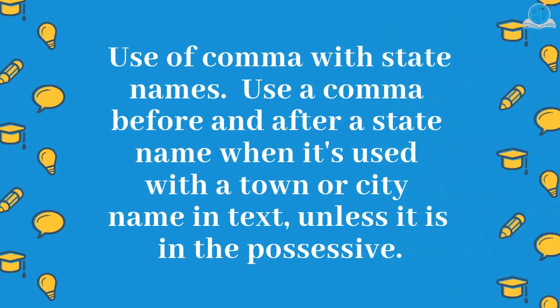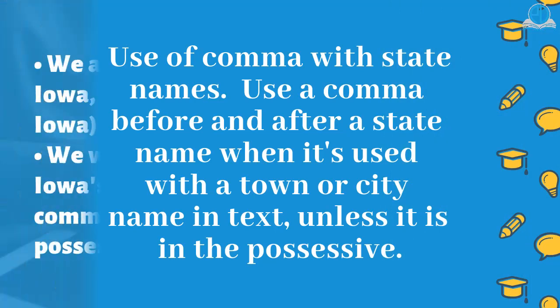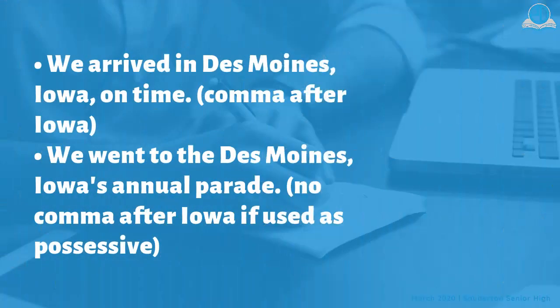Use a comma before and after a state name when it is used with a town or city name in text, unless it is in the possessive. For example: We arrived in Des Moines, Iowa, on time. But: We went to the Des Moines, Iowa's annual parade.